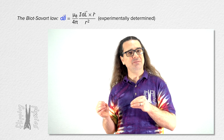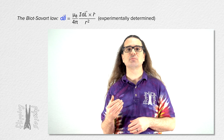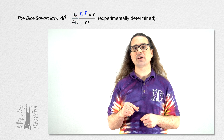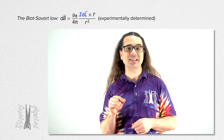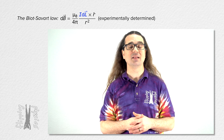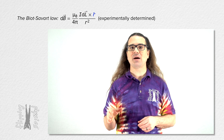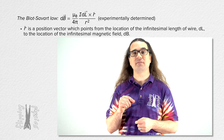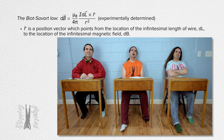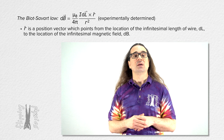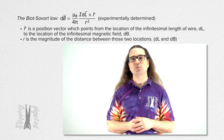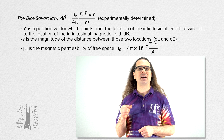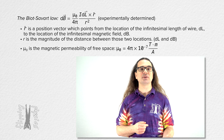The equation is: the infinitesimally small magnetic field dB equals mu-nought, the magnetic permeability of free space, divided by the quantity 4π, all times the cross product of the current in the wire times the length of an infinitesimally small portion of the wire dL, and unit vector r-hat, all divided by the square of the distance r. Unit vector r-hat points from the location of dL to the location of dB. r is the magnitude of the distance between those two points. The magnetic permeability of free space is a constant equal to 4π × 10⁻⁷ teslas·meters per amp.